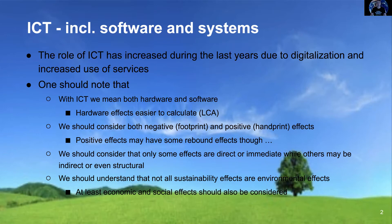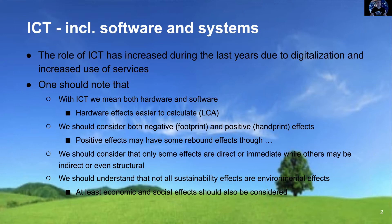The negative ones are usually called the footprint of the ICT and the positive ones the handprint of the ICT. We should also consider that these effects can be visible at different times — they can be direct or immediate effects, while others may be indirect or enabling effects, and finally structural or so-called systemic effects. We should also understand that sustainability effects are not always only environmental; we should consider at least the economic and social effects in addition to the environmental effects when considering the sustainability effects of ICT.